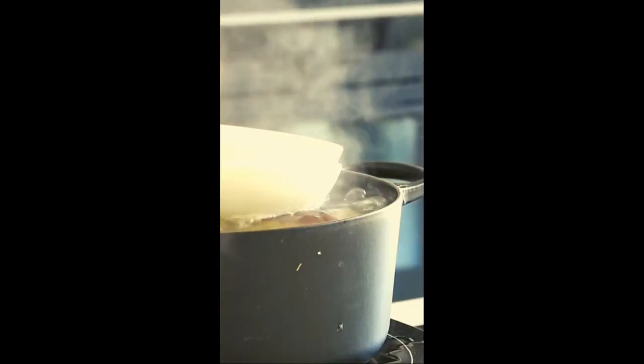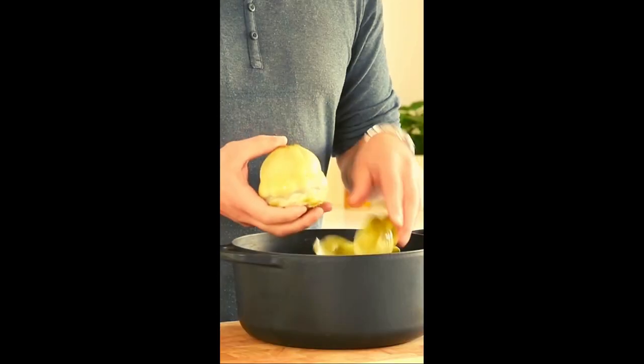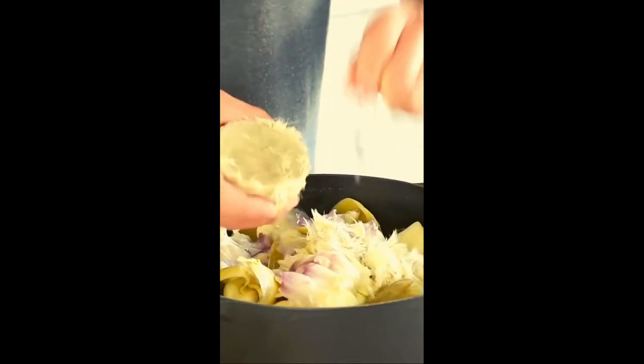Season this and then bring it to a boil for two minutes. Then turn off the heat. Once they're cold, remove all the leaves and scrape out the inside. Then trim the outside.